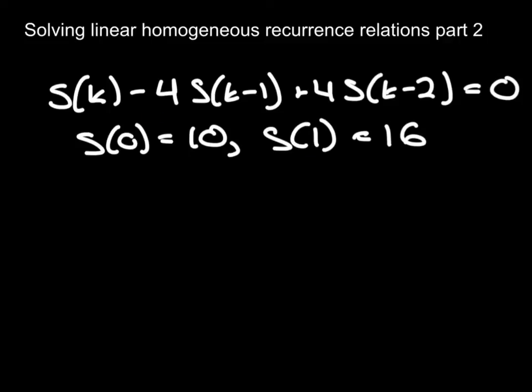So in the last video we saw a four-step algorithm for how to go about this solution process. The first step of which is to take the recurrence relation and turn it into its characteristic equation. The characteristic equation in this case,